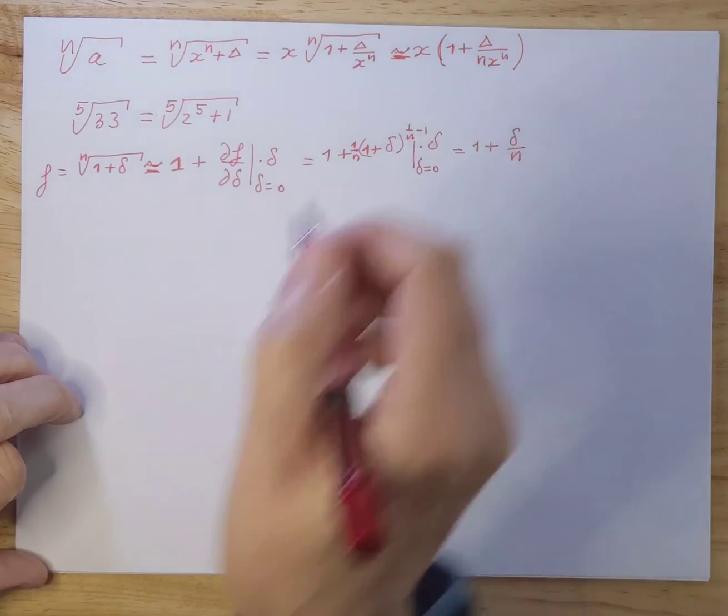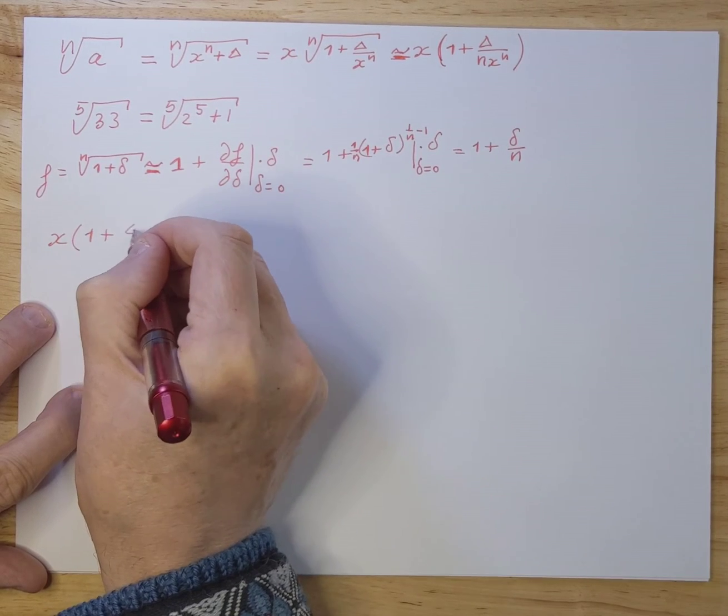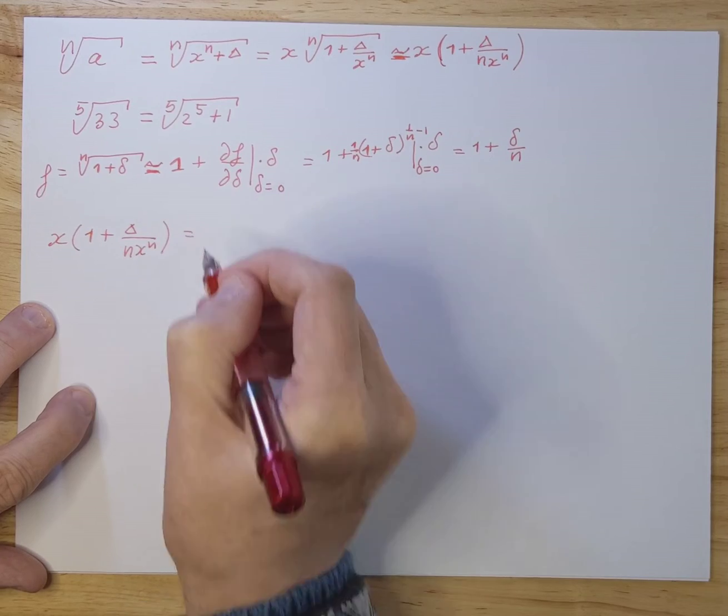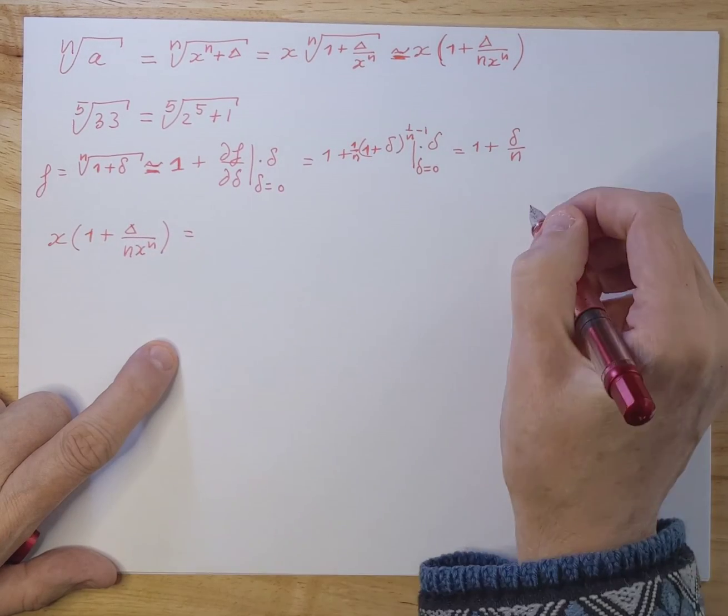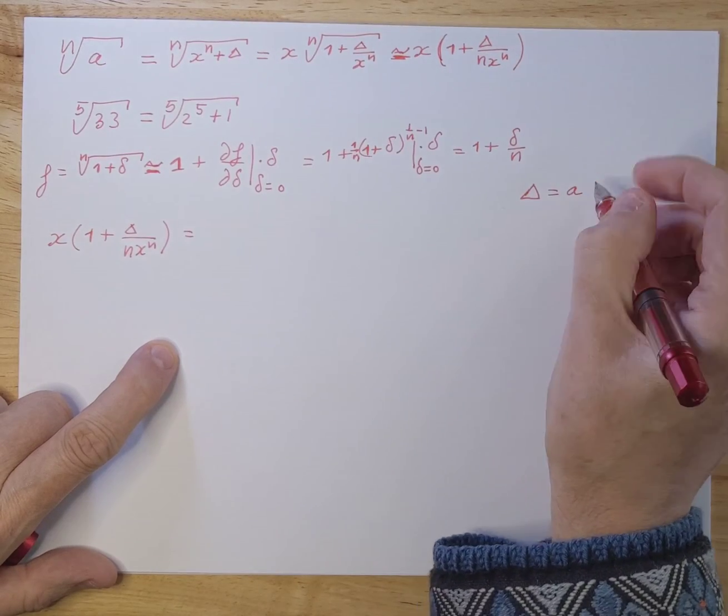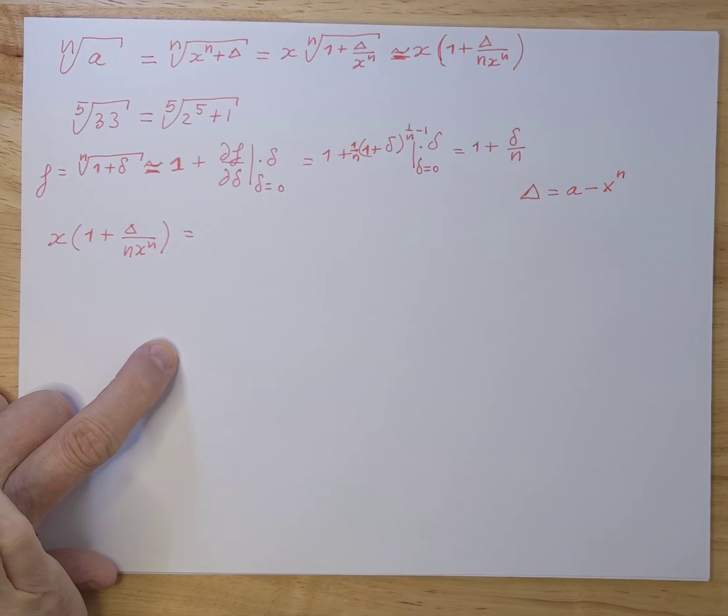And we can work this out a little bit more. So let's rewrite this, what we had was this, 1 plus delta nxn. And before we do that let's take a look at what delta is. Now delta is nothing more than a minus x to the power of n, that's what delta is.